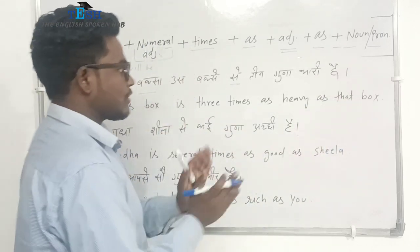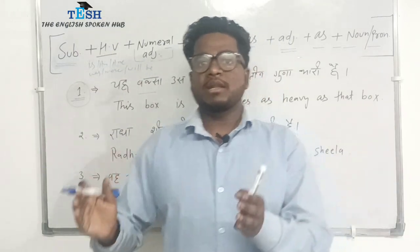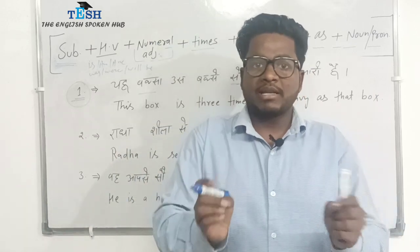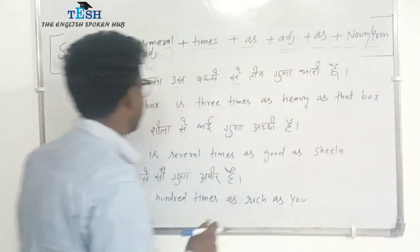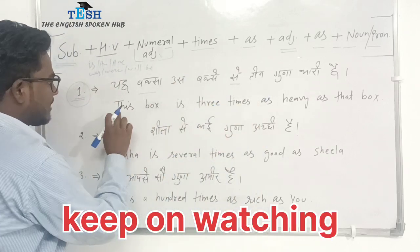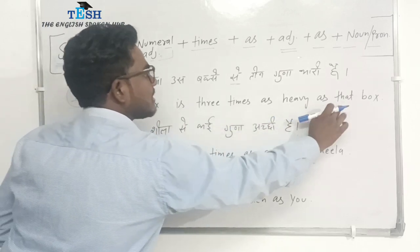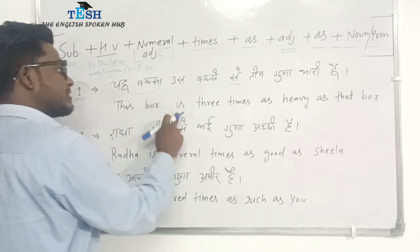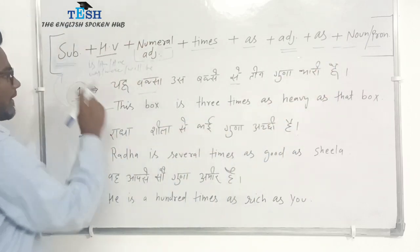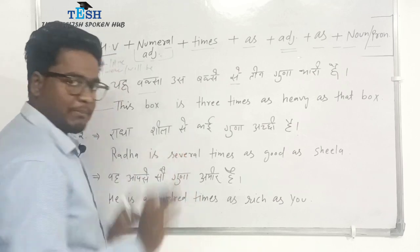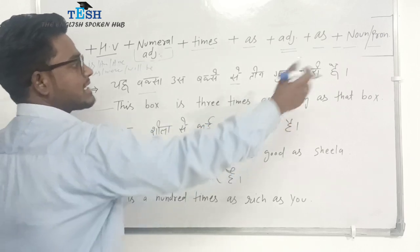When we compare things, we talk about this box. This box is three times as heavy as that box. I am explaining examples based on this structure: this box is three times as heavy as that box.